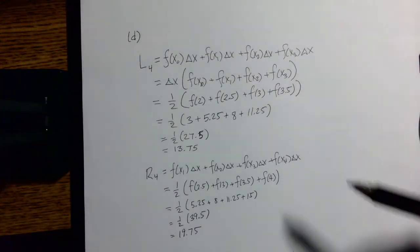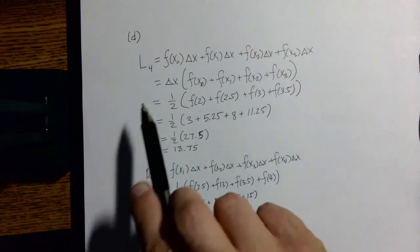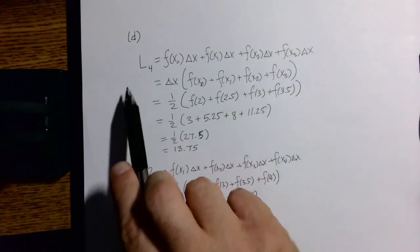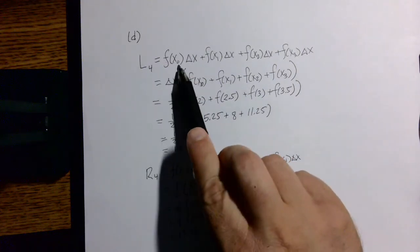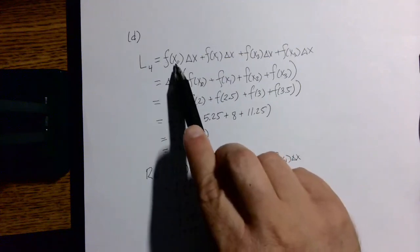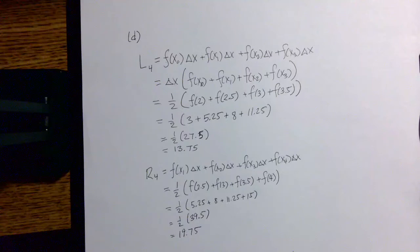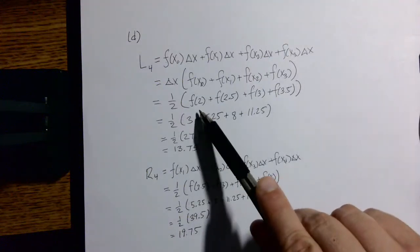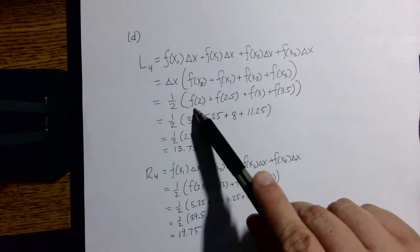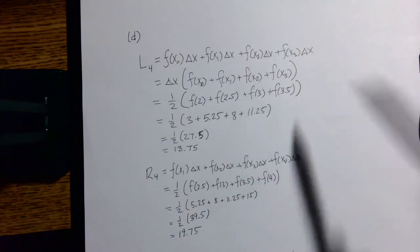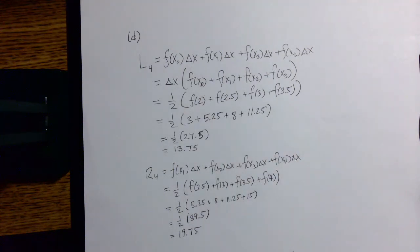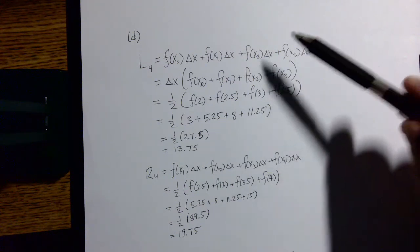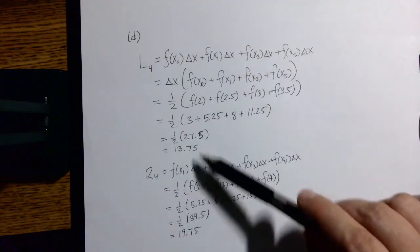Here's what those calculations will look like. For the left Riemann sum, which I've abbreviated as L₄ for four sub-intervals, we're going to evaluate the function at x₀, x₁, x₂, x₃. Or more specifically for this example, we're going to evaluate the function at 2, 2.5, 3, and 3.5. Don't forget to multiply by the width of the sub-intervals because we're calculating area. For the left Riemann sum we get 13.75.